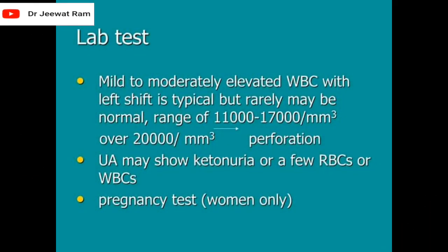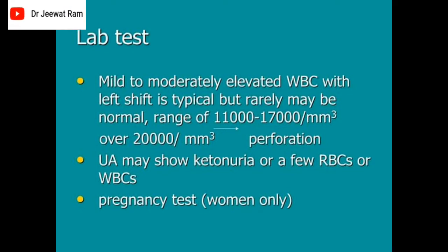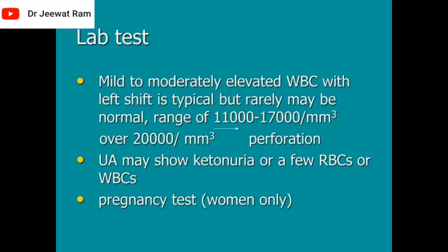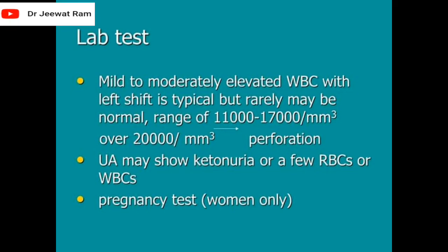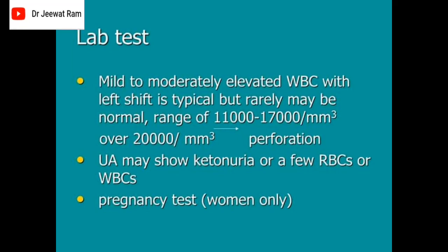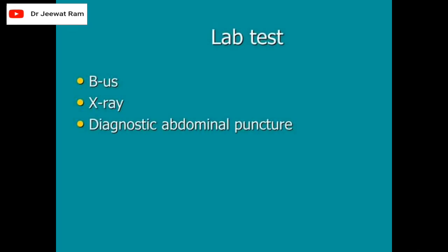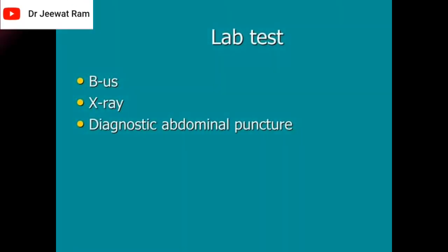Lab tests: mild to moderately elevated WBC with left shift is typical but rarely may be normal — range of 11,000 to 17,000 per cubic millimeter. Over 20,000 per cubic millimeter suggests perforation. UA may show ketonuria or a few RBCs or WBCs. Pregnancy test for women only. Abdominal ultrasound, X-ray, and diagnostic abdominal puncture.